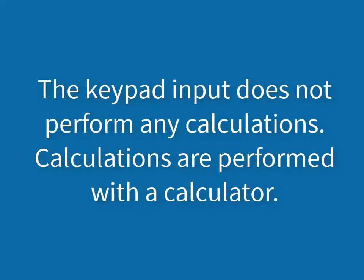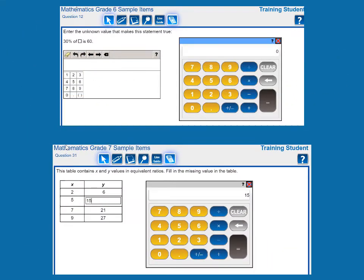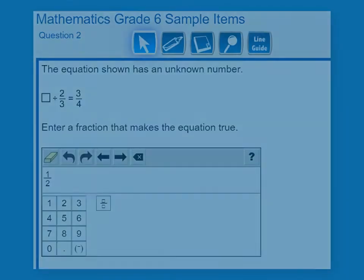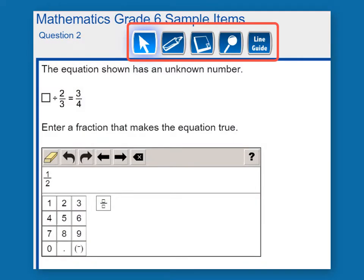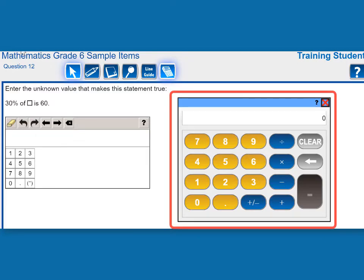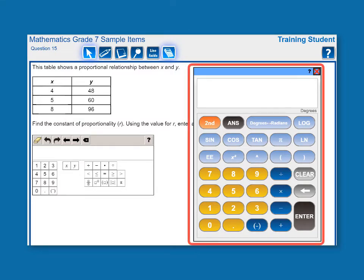The keypad input does not perform any actual calculations. Calculations are to be performed with a calculator. Students in grades 6 and 7 will use the calculator embedded within the online delivery engine. The calculator will appear in the toolbar when items allow its use. It will not appear when items do not allow its use. There are two types of embedded online calculators. In grade 6, students will see the basic calculator for items that allow its use. And in grade 7, students will be provided with a scientific calculator for items that allow its use.